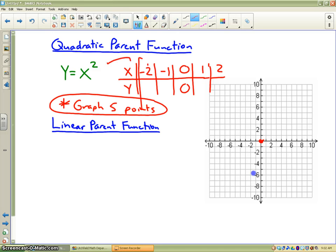If I take negative 2 and plug it in for x, negative 2 squared is going to be 4. If I plug negative 1 in, negative 1 will be 1. If I plug 1 in, I will get 1. And if I plug 2 in, I will get 4.